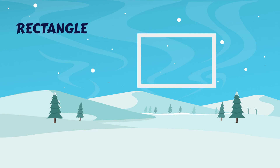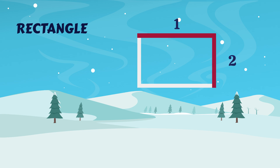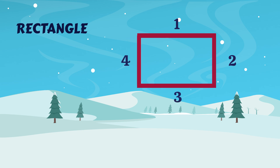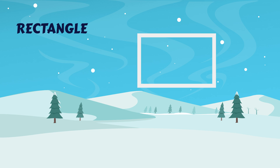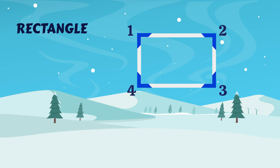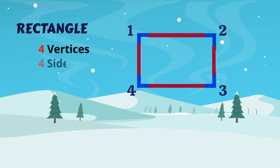Rectangle. Let's count the sides. One, two, three, four. A rectangle has four sides. Let's count the vertices. One, two, three, four. A rectangle has four vertices and four sides.